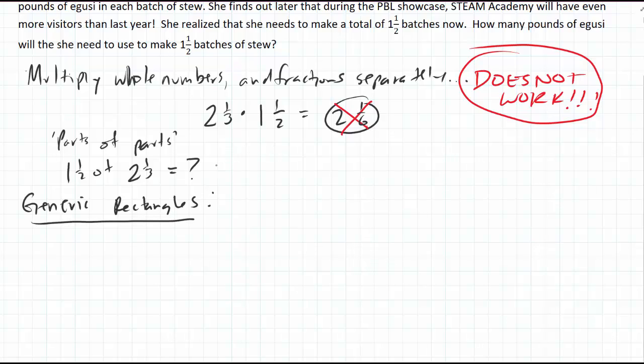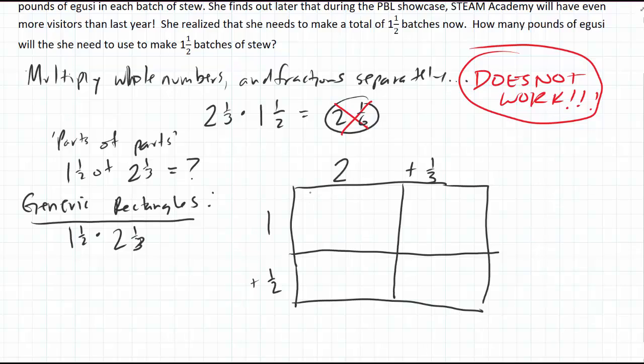For the generic rectangles, we're multiplying 1½ times 2⅓. Let's draw out the rectangle. We'll put 2 plus ⅓ on the top, and 1 plus ½ on the bottom. Here we have 1 times 2, which is 2. Here we have 1 times ⅓, which is ⅓. Here we have ½ times 2, and that's half of 2 which is just 1. And here we have ½ times ⅓. Multiply fractions, multiply across: 1 times 1 is 1, 2 times 3 is 6, so we'll have ⅙.